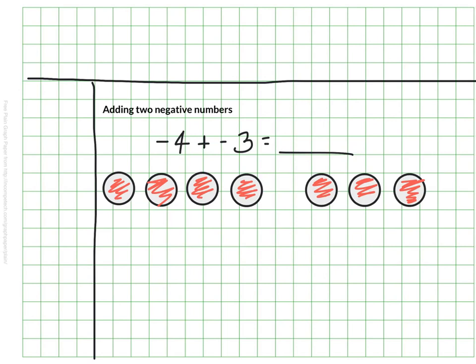And when I look at that together, I can see I have 1, 2, 3, 4, 5, 6, 7 red chips. And since red means negative, that means my sum is a negative 7. So negative 4 plus negative 3 is a negative 7.